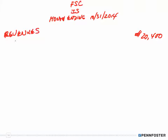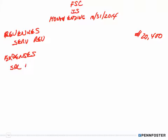So I have service revenue with indentation, and then my expenses: salaries expense — and I would write out the word expense — and rent expense.